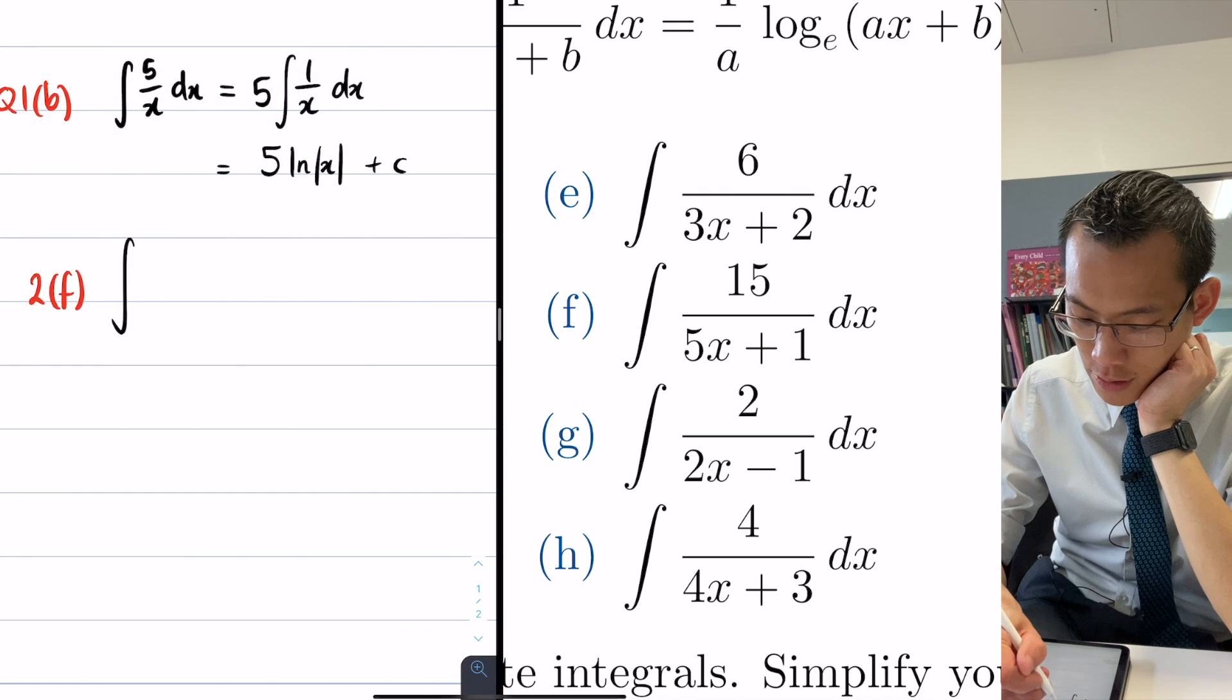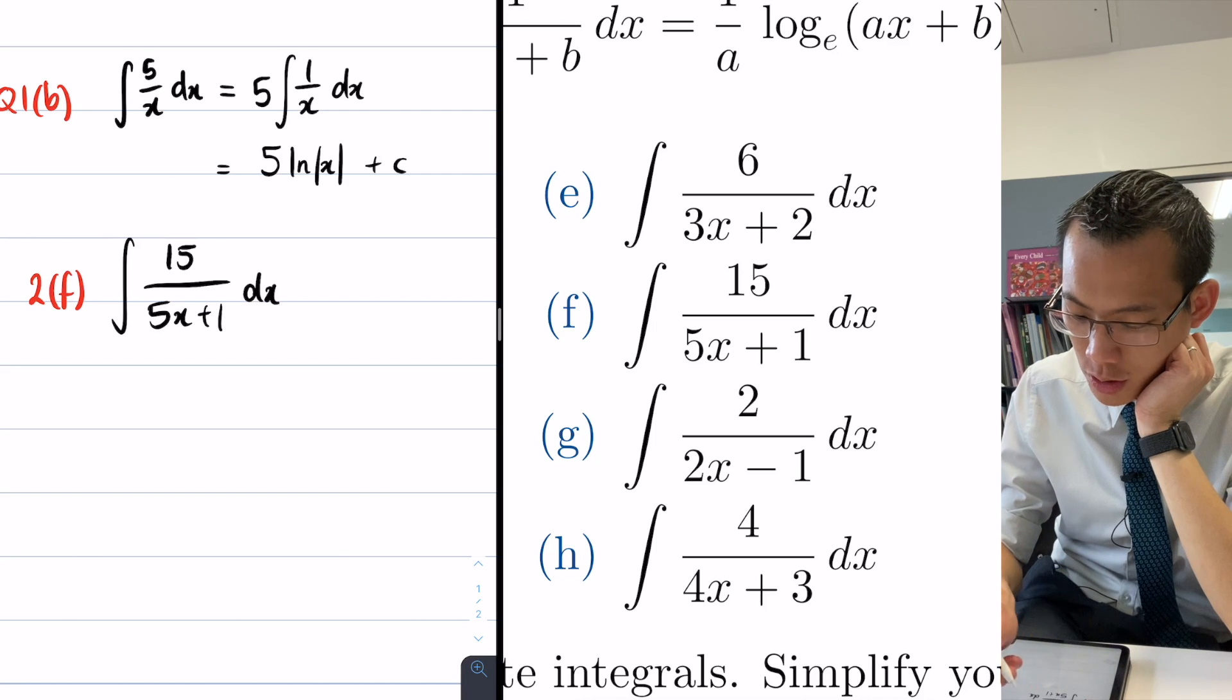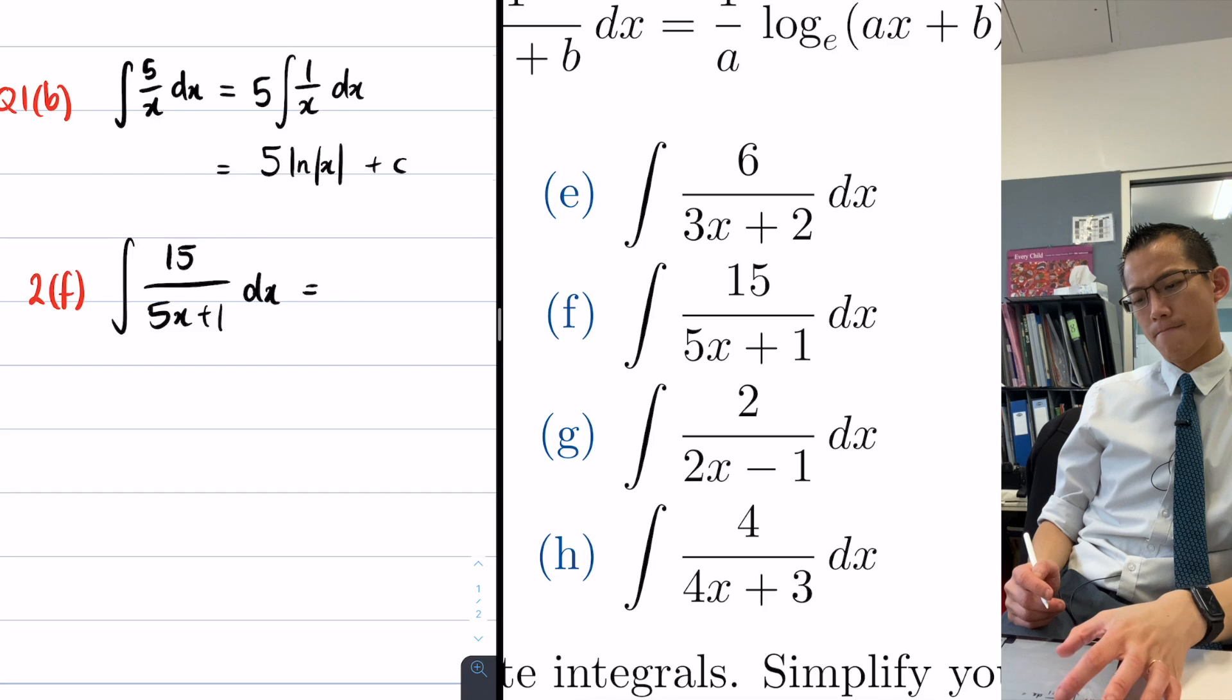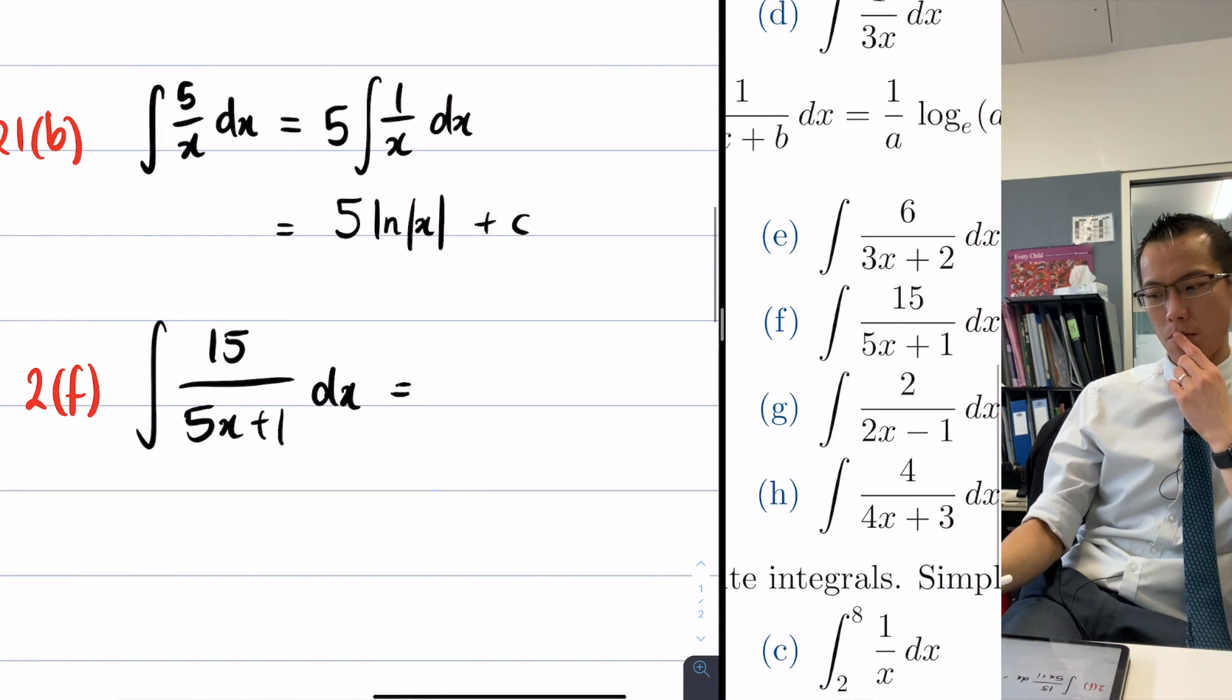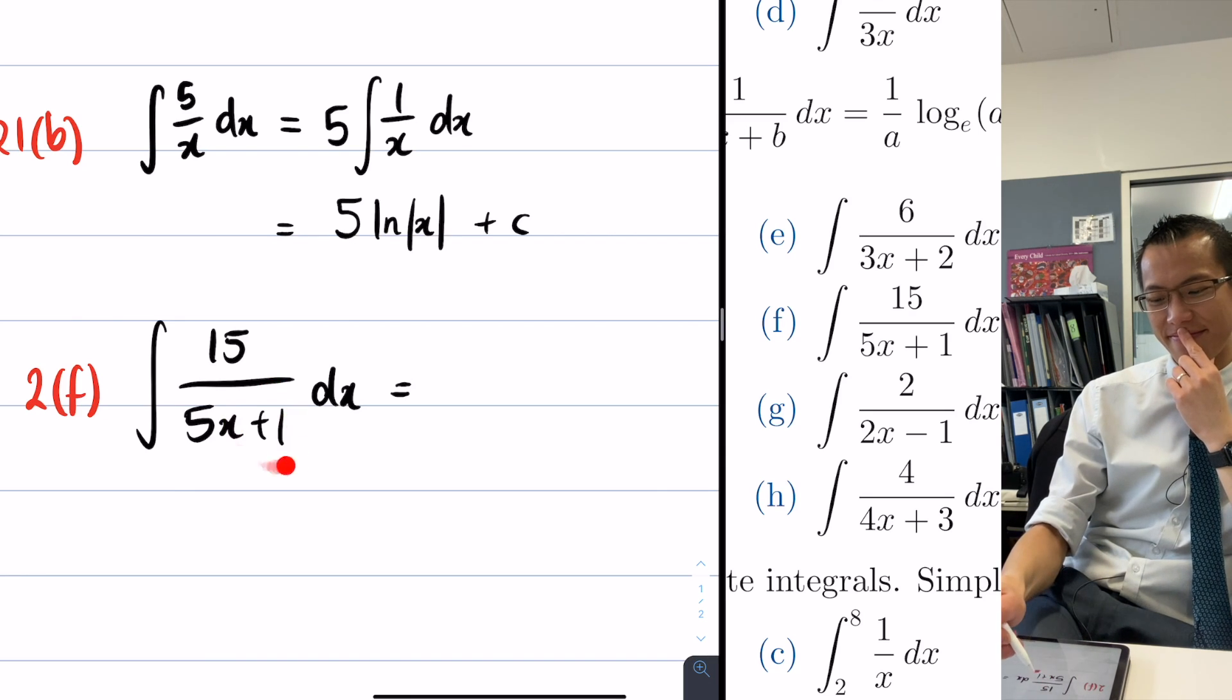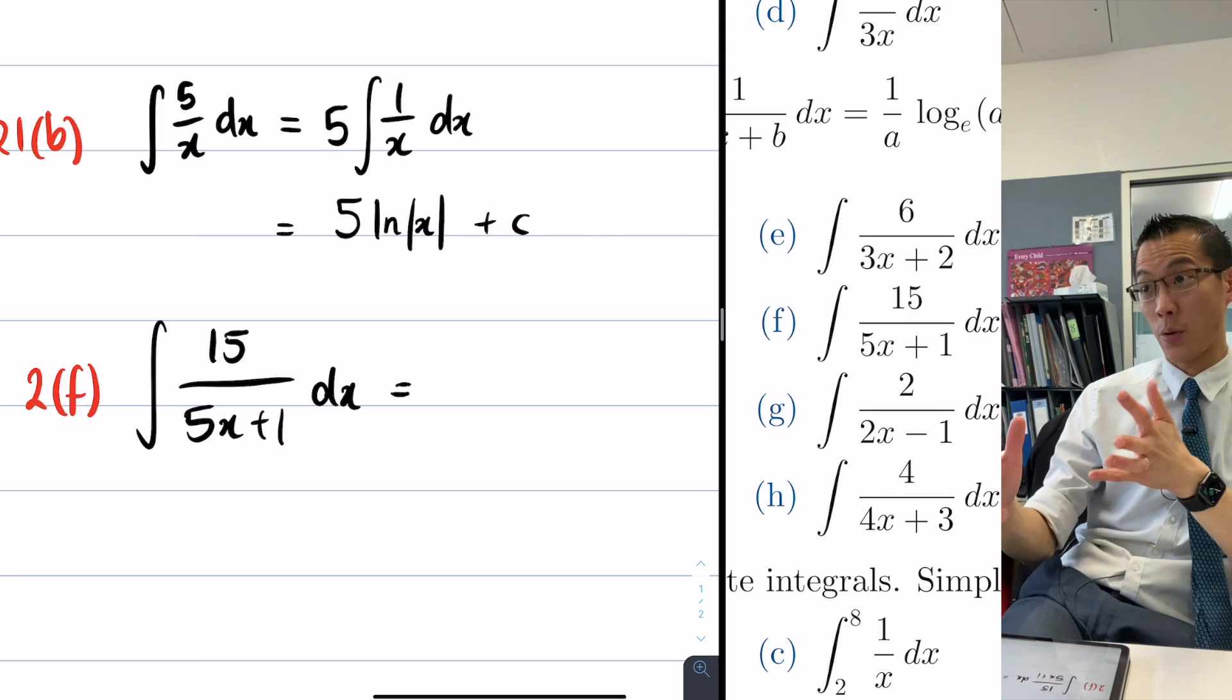Okay, so we've got a 15 on the top and I've got a 5x plus 1 dx. So what's your instinct for the first thing to do in this question? Well, recognize the pattern. I don't like that plus 1 because if I did not have that plus 1, I'd be able to simplify into basically what we were doing before, the 5x, 5 over x. Right. And you're like, oh, this can just simplify very quickly, right?